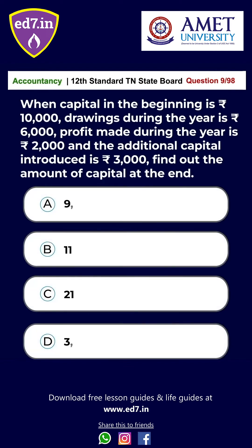Question 9: When the capital in the beginning is ₹10,000, drawings during the year is ₹6,000, profit made during the year is ₹2,000, and additional capital introduced is ₹3,000, find out the amount of capital at the end. Option A: ₹9,000, option B: ₹11,000, option C: ₹21,000, option D: ₹3,000. The answer is option A: ₹9,000.